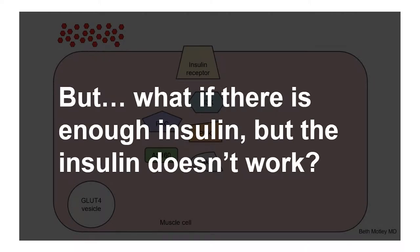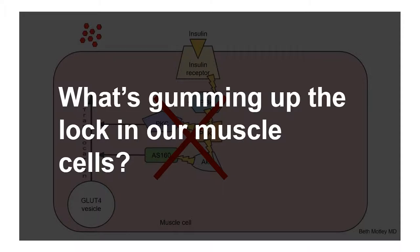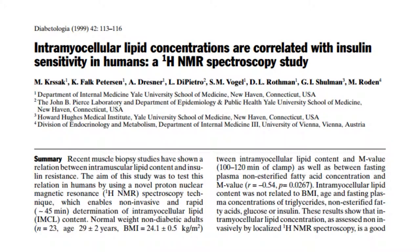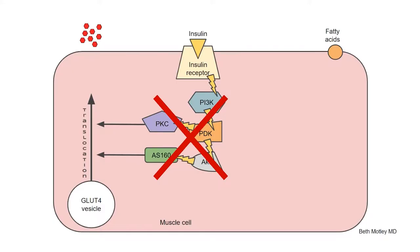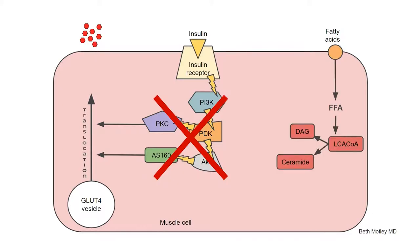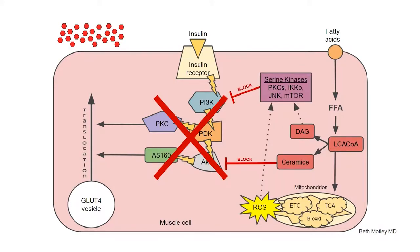But what if there is enough insulin, but for some reason the insulin doesn't work? In this scenario, we have the key to unlock the door — it looks like all the players are in place — but something is gumming up the lock in our muscle cell. What's gumming up the lock? It's intramyocellular lipids, or fat in our muscle cells. In response to a high fat diet, those fatty acids in the bloodstream enter the muscle cell. They break down into free fatty acids and all of these toxic breakdown products that together block the insulin signaling pathway.